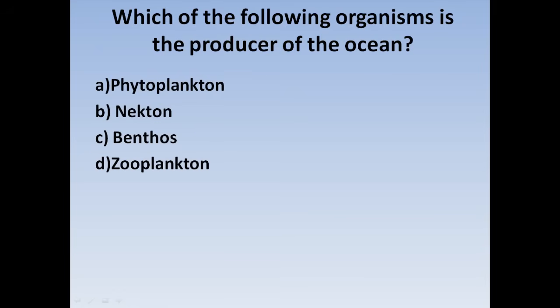Next question: Which of the following organism is the producer of the ocean? Option A: Phytoplankton, Option B: Necton, Option C: Benthos, Option D: Zooplankton. Correct answer: Option A, Phytoplankton is the producer of the ocean.